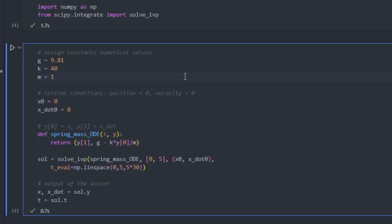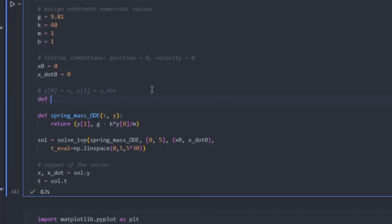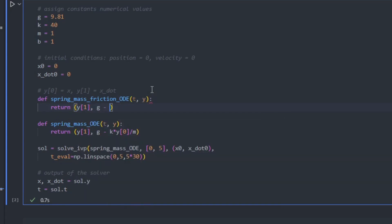We update the simulation code by first adding our constant b. We'll add a new differential equation called the spring mass with friction ODE. It takes in t and y. We'll return x dot comma g minus k x over m minus b times x dot over m. The last thing we'll do is we'll update our solve IVP method and we'll run that.